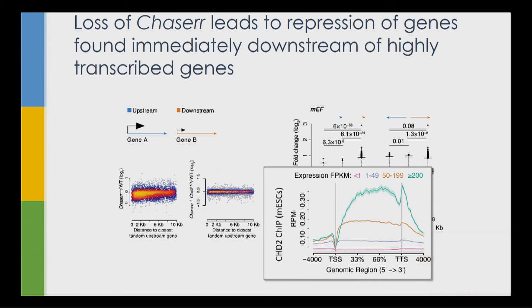This suggests CHD2 is active in these intergenic regions. Using published CHD2 ChIP data, we saw that in highly expressed genes there is indeed a peak of CHD2 occupancy in the window of about 2 kb downstream of transcription termination sites — which is exactly the window where we see the effect. So in regular conditions, CHD2 protein is found downstream of transcription termination sites. When Chaser is gone, excess CHD2 protein goes to these intergenic regions, causing transcription interference and downregulation of downstream genes.